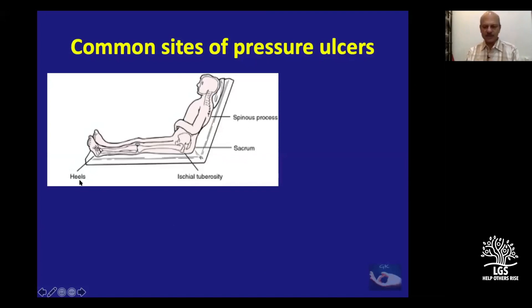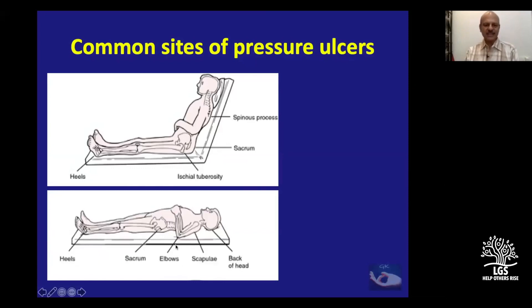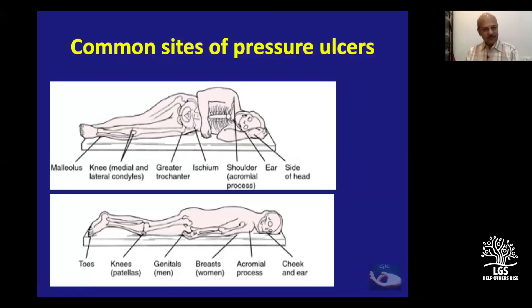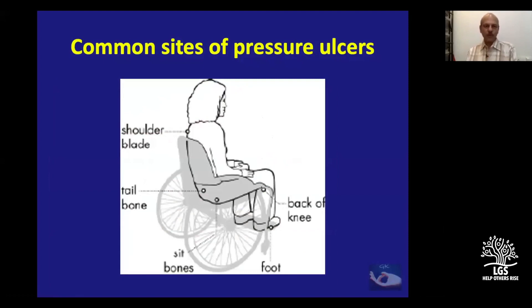When the patient is totally supine, pressure is on the heels, sacrum, elbows, scapulae, and back of the head. In the right or left lateral position, the malleoli, knees, greater trochanter, ischium, shoulder acromion, ear, and side of head can be involved. When prone, pressure sores can develop on toes, knees, genitals, breasts in women, acromion, cheek, and ear. When wheelchair-bound, sores occur at the shoulder blade, coccygeal region, back of knee, and foot.